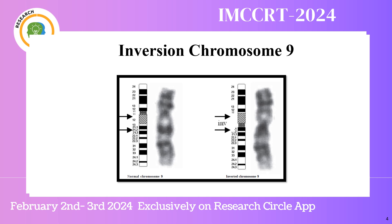Chromosome inversion is a relatively common structural alteration — the result of two breaks on the same chromosome followed by reinsertion of the fragment between the breakpoints in inverted order. There are two types of inversion: if both breakpoints are on the same side of the centromere, it is described as paracentric inversion; if they are on both sides of the centromere, it is called pericentric inversion.